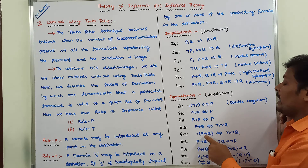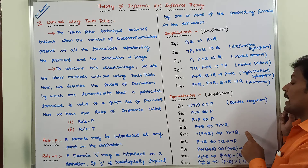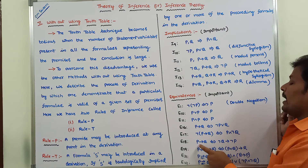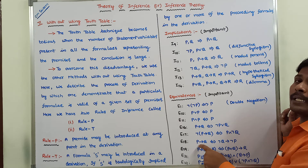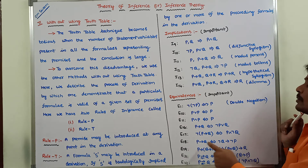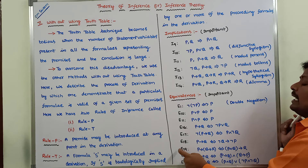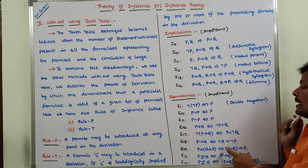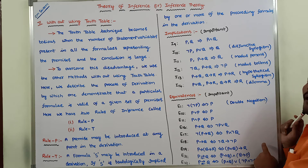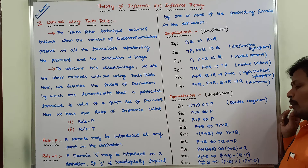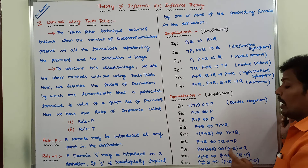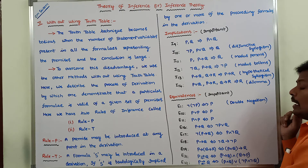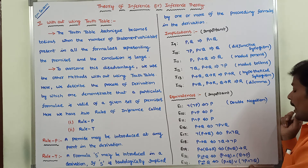E17: negation of P conditional Q is logically equivalent to P and negation Q. E18: P conditional Q is logically equivalent to negation Q conditional negation P — this is the contrapositive, also an important formula. E19: P conditional (Q conditional R) is logically equivalent to (P and Q) conditional R — also very important. E21: P biconditional Q is logically equivalent to (P conditional Q) and (Q conditional P). E22: P biconditional Q is logically equivalent to (P and Q) or (negation P and negation Q).